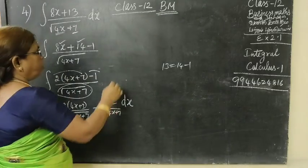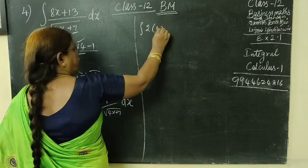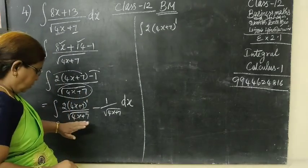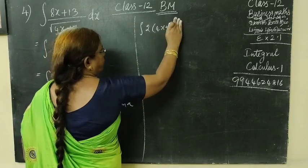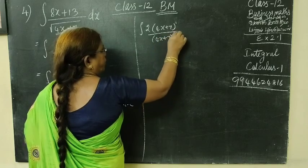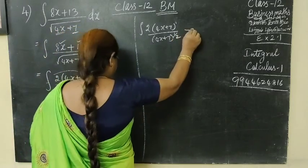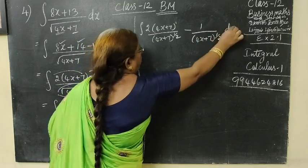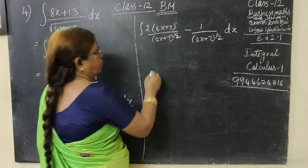We can do it. Integral 2 times 4x plus 7. Root is equal to half power, so 4x plus 7 power half. Then minus 1 by 4x plus 7 power half. Root power will be half.